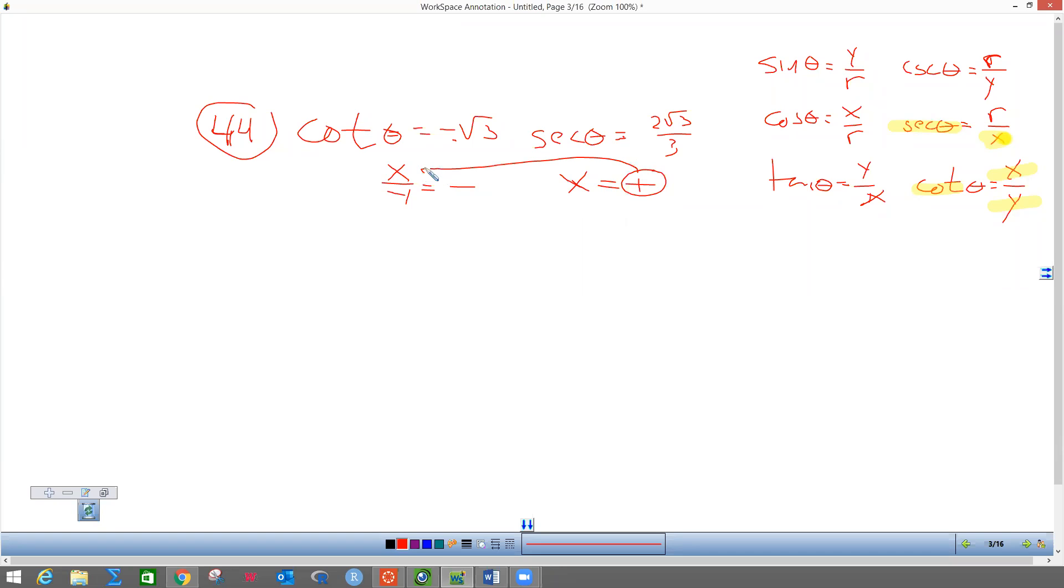So I've got to ask myself: a positive over what will give me a negative? A positive divided by what kind of number gives me a negative? That's right, a negative. So this means Y is negative.